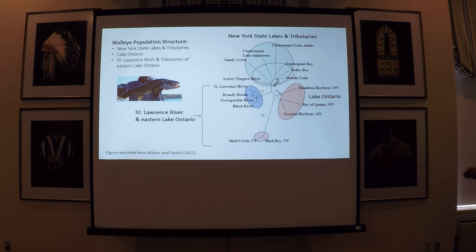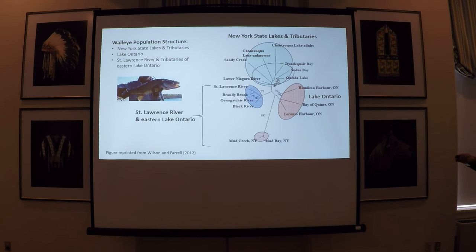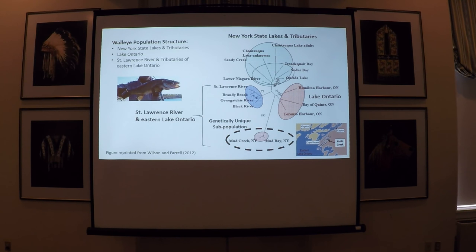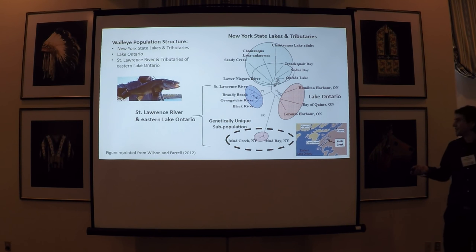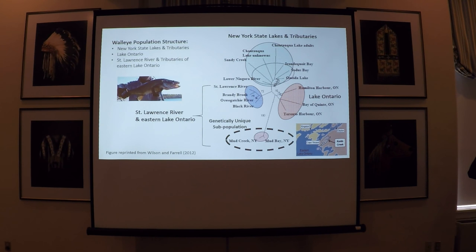But there is this one little outlier — Mud Creek and Mud Bay. This population branches off from those more associated with the Canadian waters of Lake Ontario, but this is actually a tributary of Eastern Lake Ontario, and the tributary is in New York State. What was found is that this population has a genetically unique or distinctive identity from all the other walleye populations that were sampled in this survey.